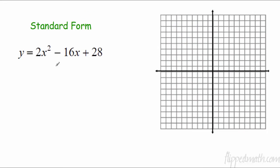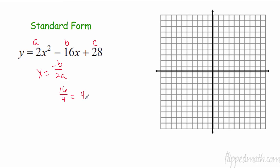That's vertex form. Now we have standard form. Remember in standard form we have to actually find the vertex first, so I'm going to use x equals negative b over 2a. Here we have a, b, and c. So negative of negative 16 is positive 16, over 2 times a — 2 times 2 is 4 — so 16 over 4 is 4. My x-coordinate is 4, and that's going to be my axis of symmetry.